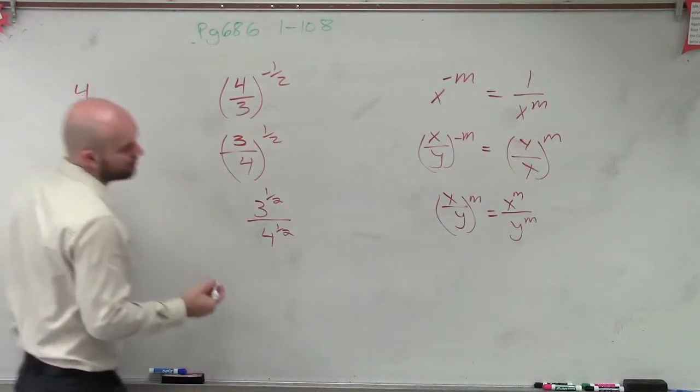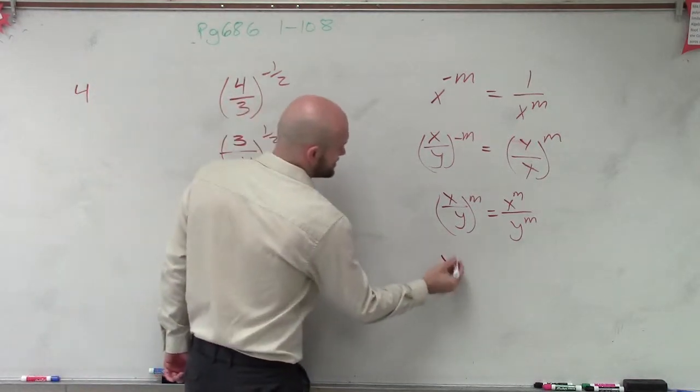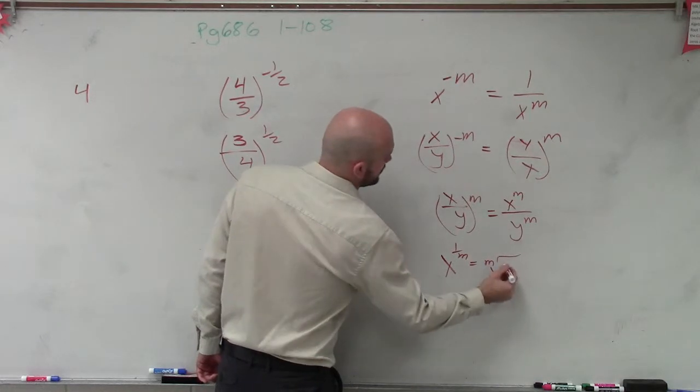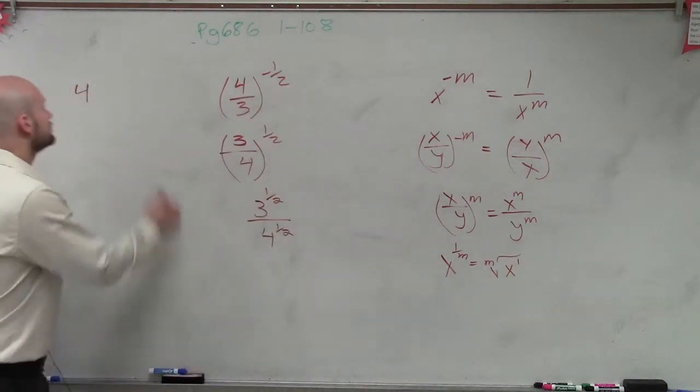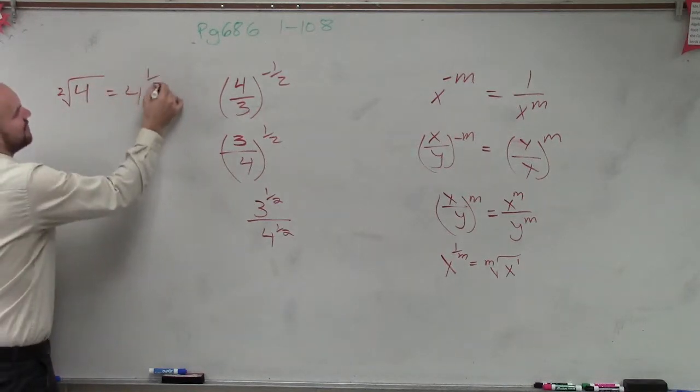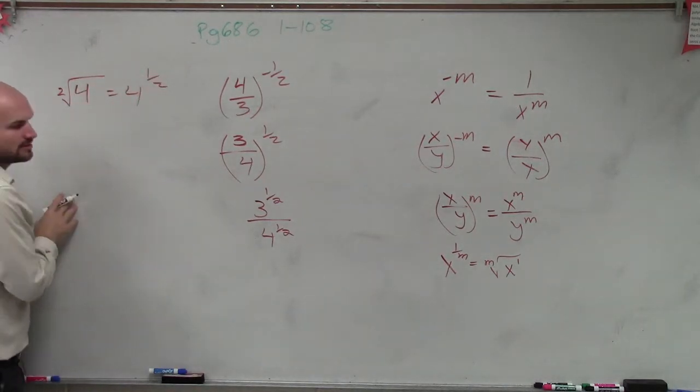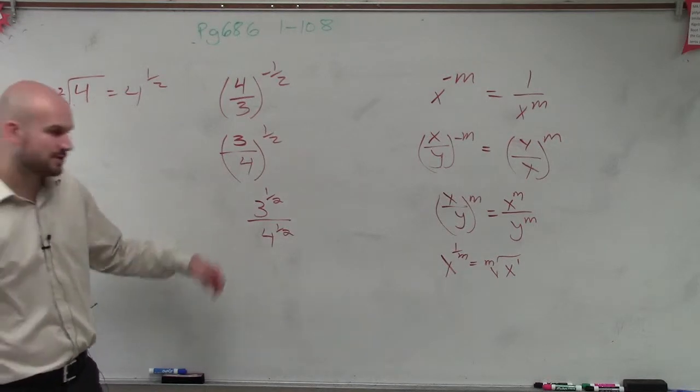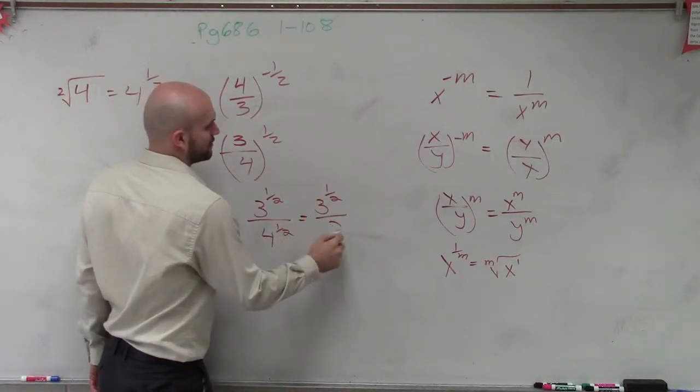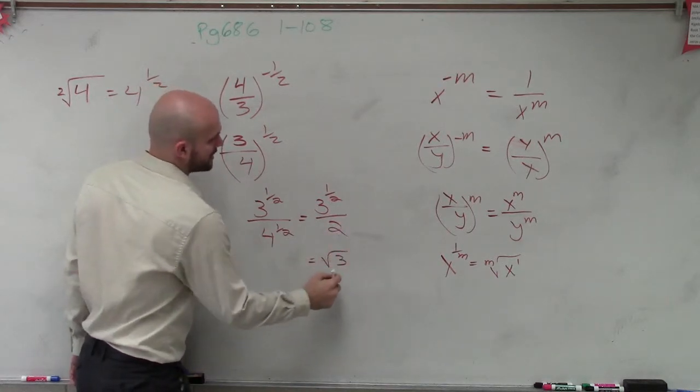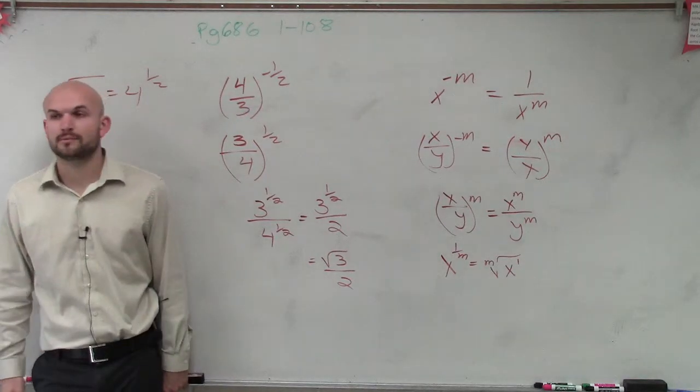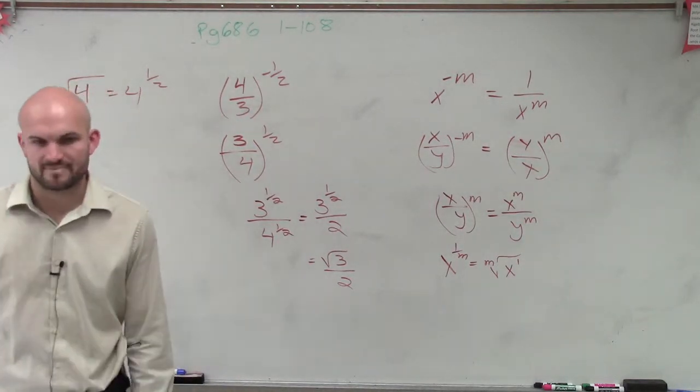x to the 1 over m is equal to the m root of x to the first power. So 4 to the 1 half power is equal to the square root of 4. And do we know what the square root of 4 is? 2. So we could leave this as a rational exponent, or you could write it as the square root of 3 over 2 as a radical exponent. But that would be your simplified form. Okay? And that's it.